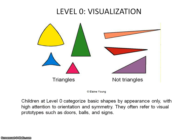Level 0 is Visualization. Children at this level categorize basic shapes by appearance only, with high attention to orientation and symmetry. They often refer to visual prototypes such as a rectangle looks like a door, a circle looks like a ball, a yield sign looks like a triangle. They are not able to describe triangles in an abstract sense, but simply as something that it looks like.